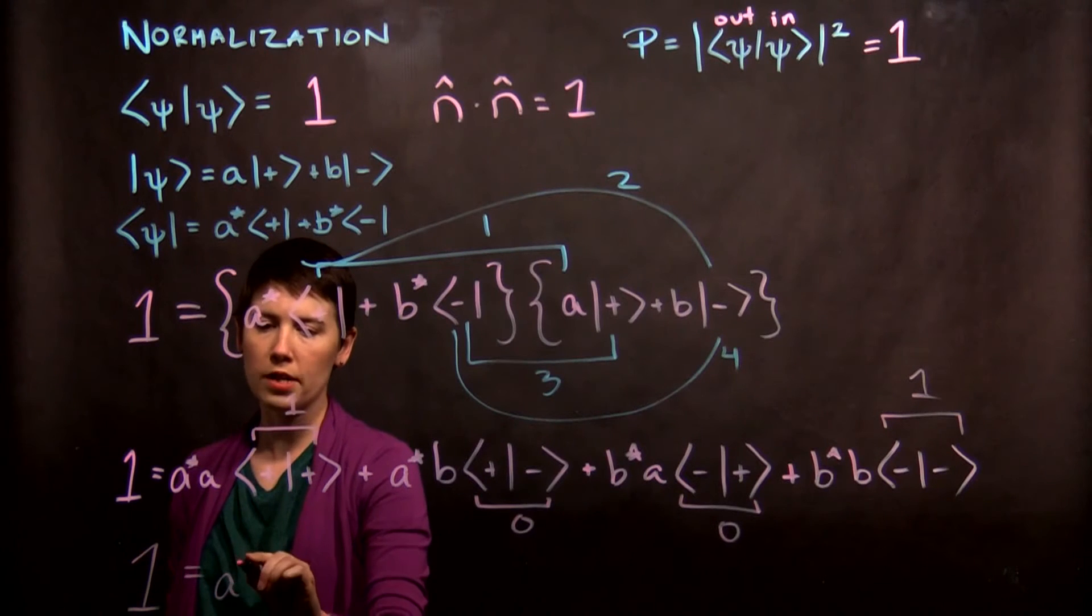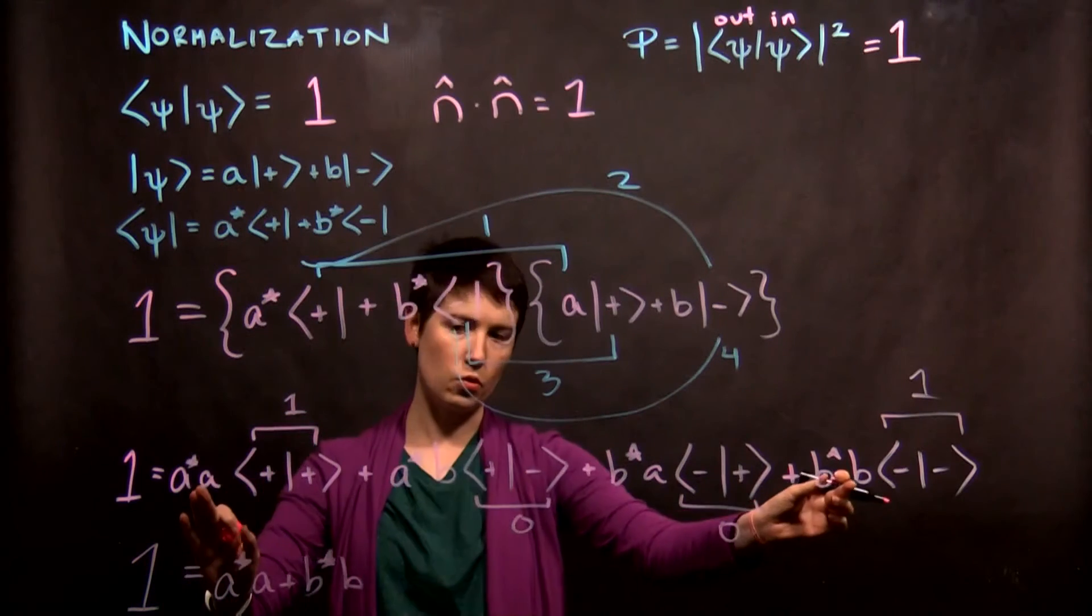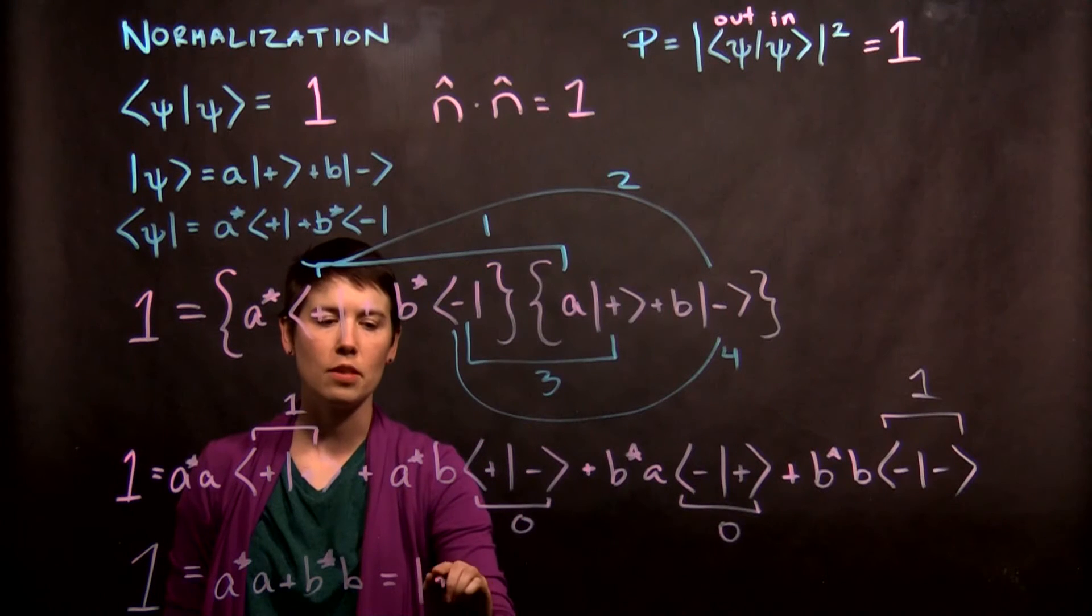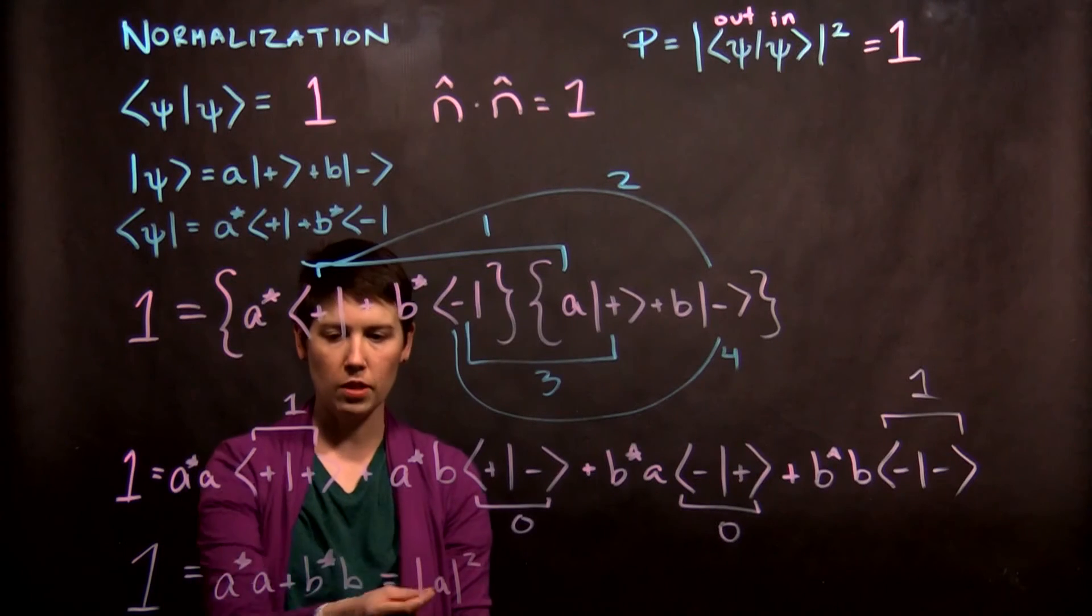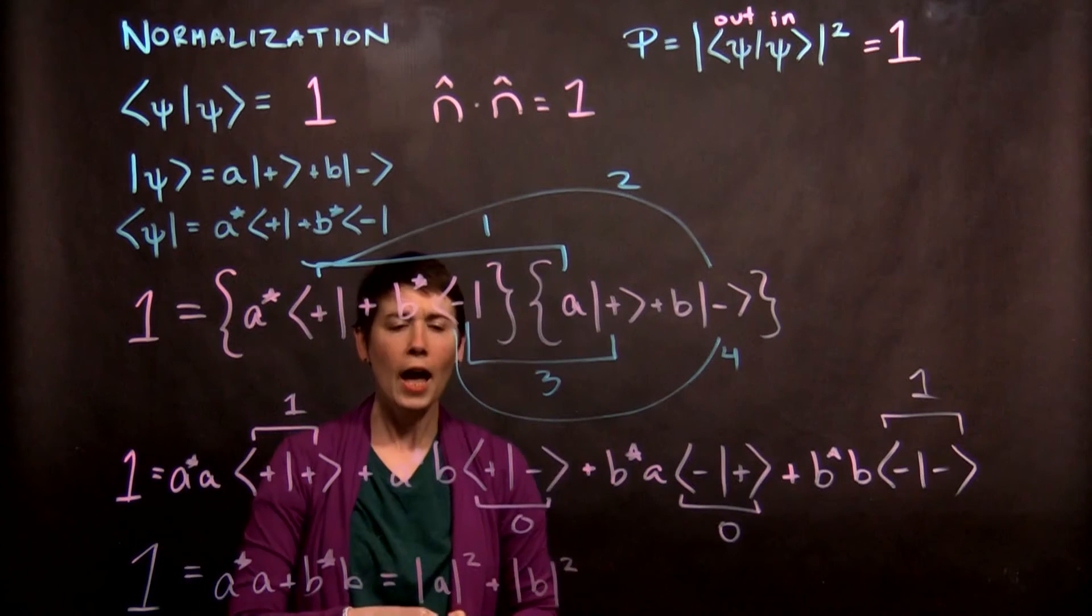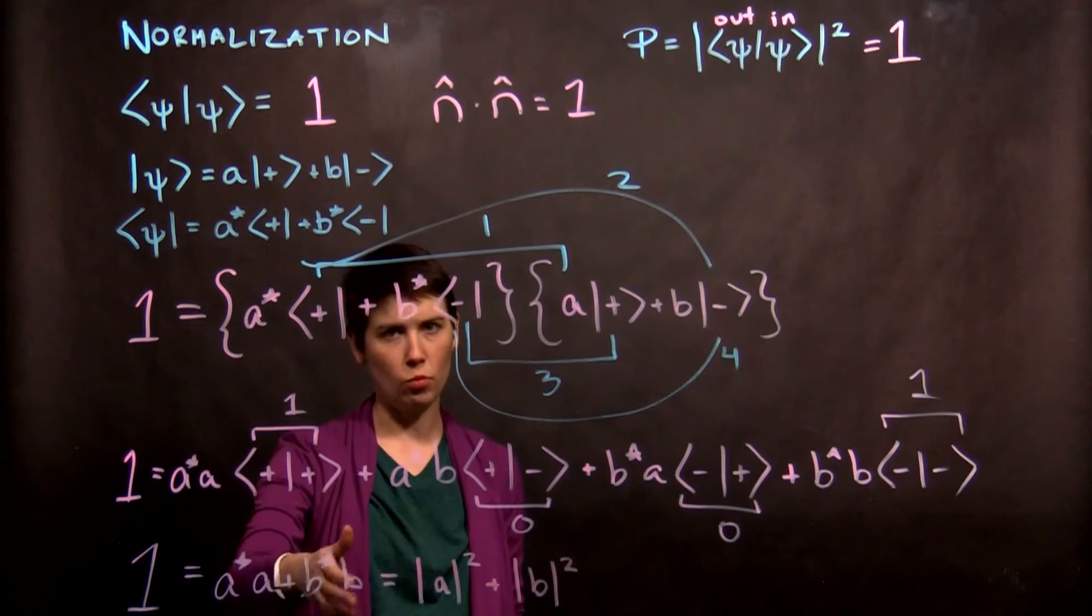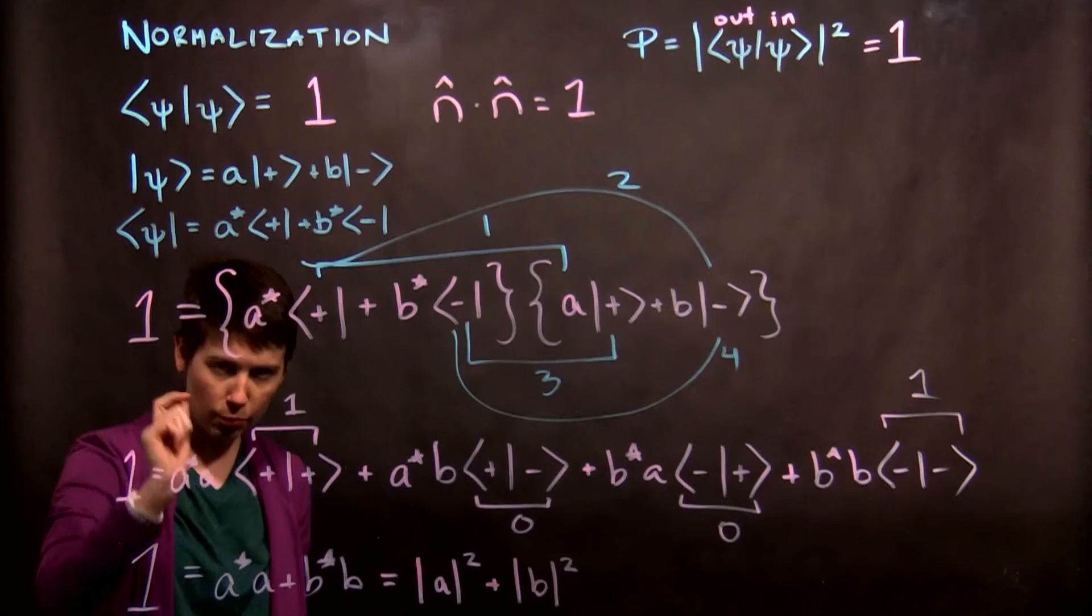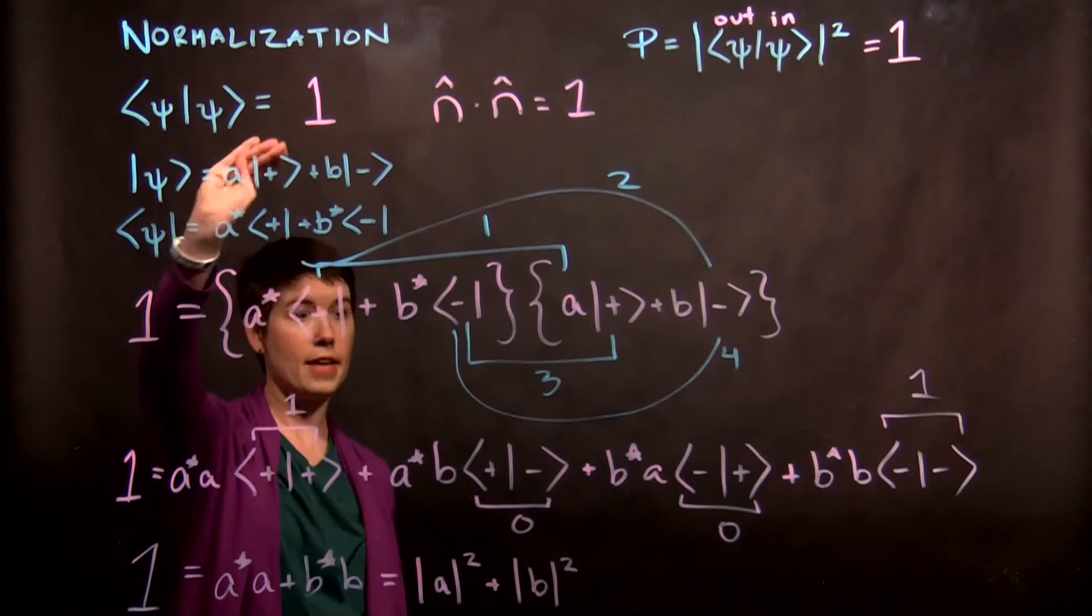And what we're left with is one equals A star A plus B star B. And remember that these coefficients are scalars, so we can flip the order if we want. But notice that A star A is the same as the magnitude of A squared. The complex conjugate times itself gives us that plus the magnitude of B squared. And so if B itself was a number like one-half, then the complex conjugate of one-half is still just one-half. But because these can be complex, it's always really helpful to put that star there even if you don't need it in the end.